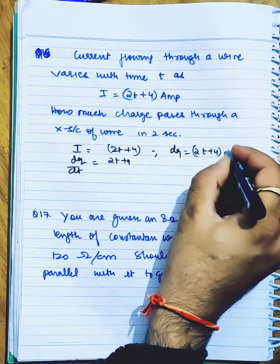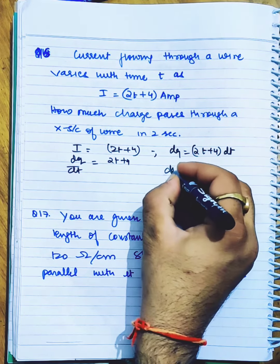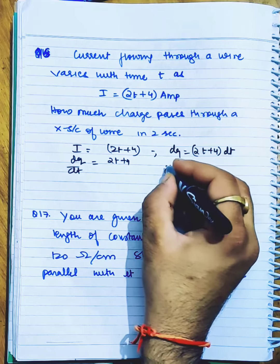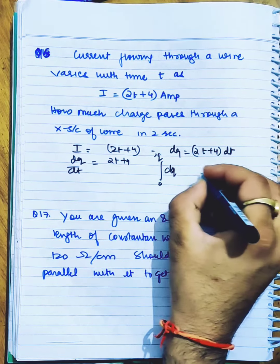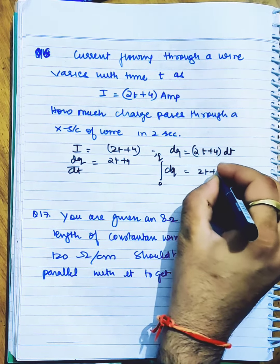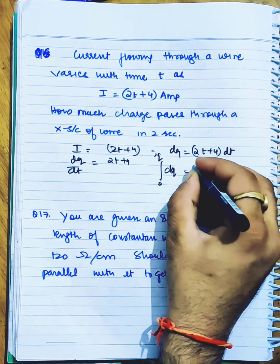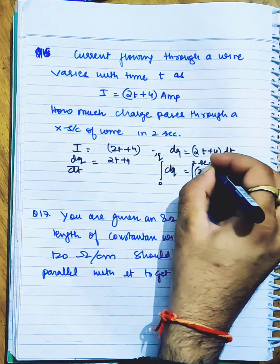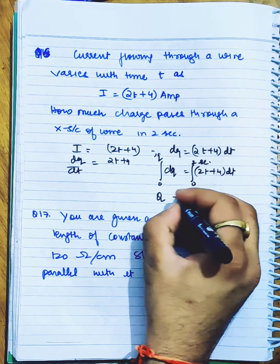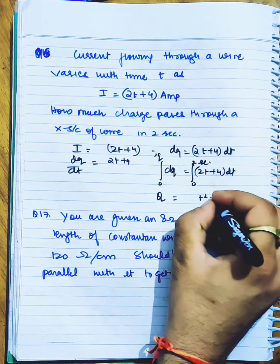Now integrate dq from 0 to q: integral of (2t + 4) dt from 0 to 2 seconds. Total charge q equals 2t squared over 2 plus 4t, which simplifies to t squared plus 4t.